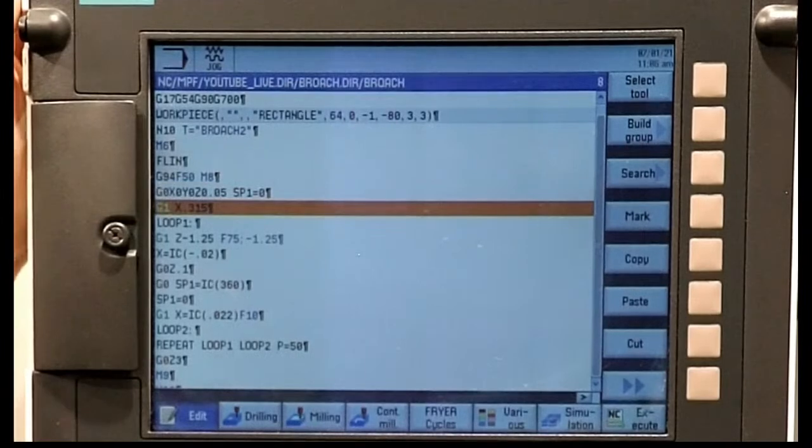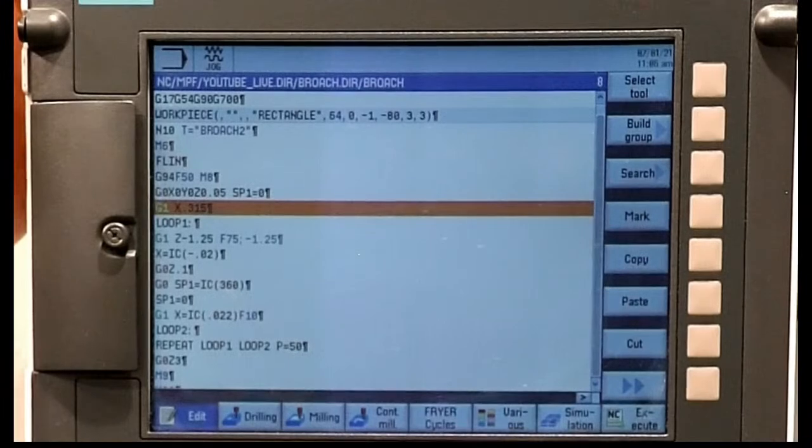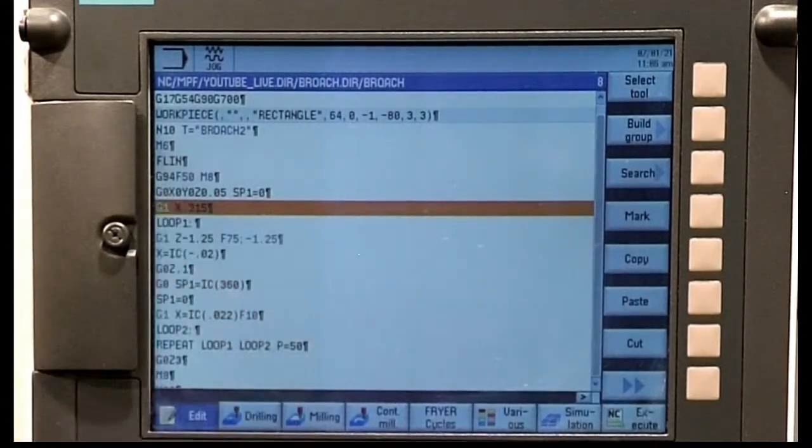I moved over, and now in this first basic example, I'm not taking any radius compensation into account. So I needed to calculate where the edges of this broaching tool would be on the part just as it starts to engage. So it's certainly lower than the half-inch diameter. And then I have to take into account the radius of the tool to shift it back. So I really kind of eyeballed it, came up with this 315 thou value. That would be the physical true position of the center line of the spindle at that point.